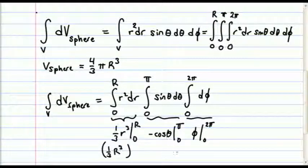The second piece, we have negative cosine of θ evaluated from 0 to π. And that's going to give us minus of minus 1 minus 1, because cosine of 0 is equal to 1. And that's just equal to 2. And then finally, we have φ evaluated from 0 to 2π. Well, it's just 2π minus 0, which is 2π. And so if we multiply all of these together, we wind up with 4/3 π R³. Great. So we can do volume integrals.